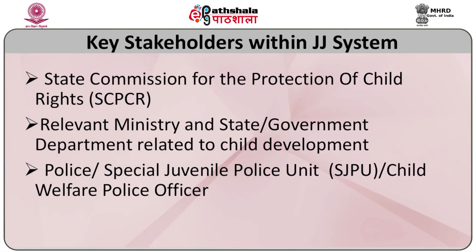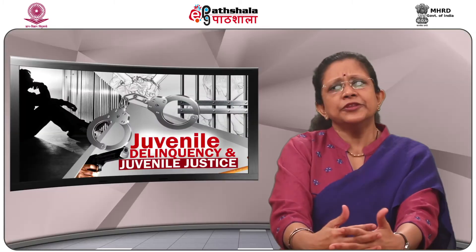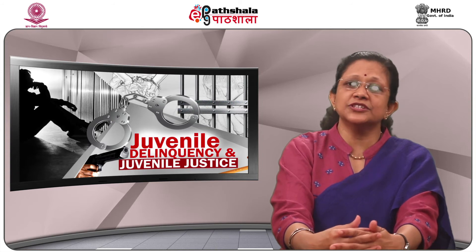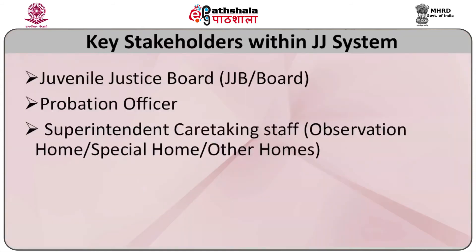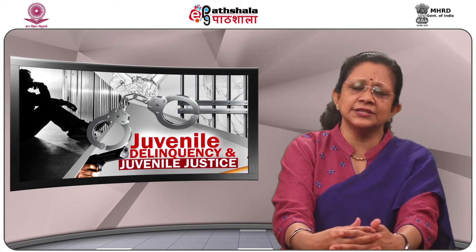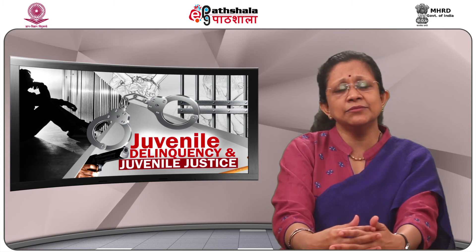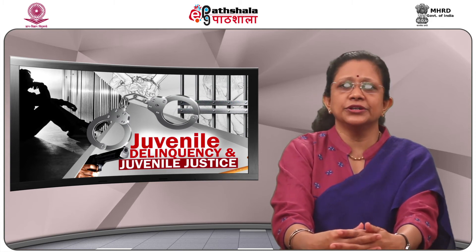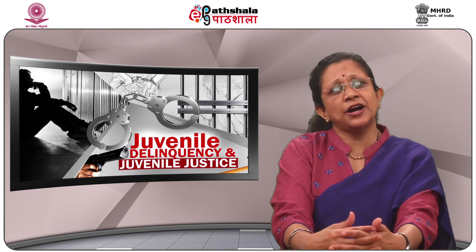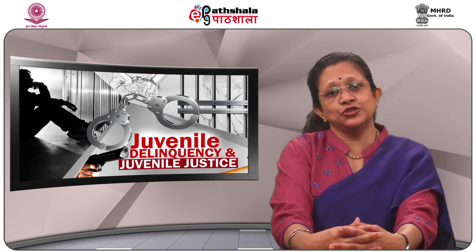The police — particularly the Special Juvenile Police Unit (SJPU) and Child Welfare Police Officer — are the first point of contact for children in conflict with law. The role of the police and procedures governing them have been stated in Part 1 of this module. The Juvenile Justice Board is the point of convergence of all different processes and procedures within the juvenile justice system from the time the child enters to the final order. The role of the board and procedures governing it have also been given in Part 1.